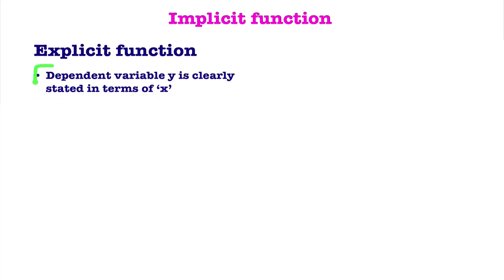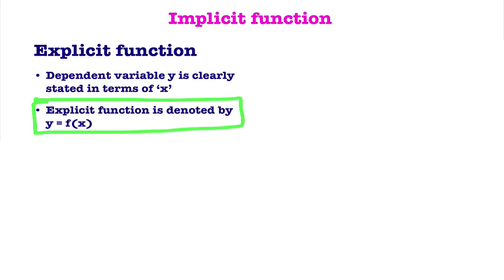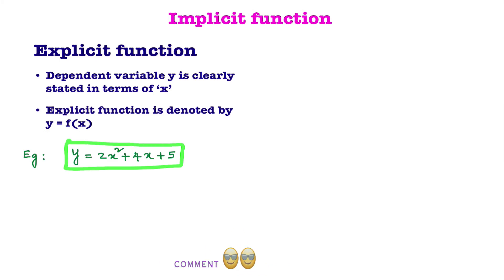What is an explicit function? The dependent variable y is clearly stated in terms of x. Explicit function is denoted by y = f(x). For example, y = 2x² + 4x + 5. This is an example of an explicit function.